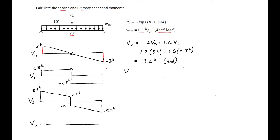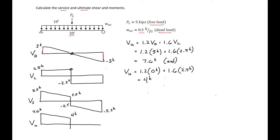We also need to find Vu at mid-span. There, the dead load shear is 0 kips, and 1.6 times the live load of 2.5 kips gives 4 kips. So the factored shear diagram goes from 7.6 kips at the left end, down to 4 kips, then jumps to negative 4 kips, and down to negative 7.6 kips at the right end.